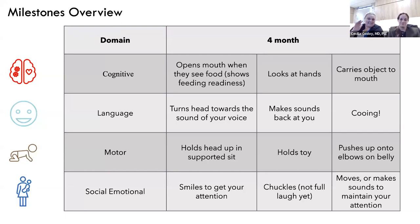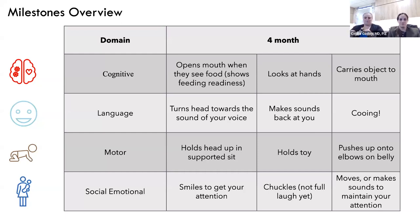Motor milestone at four months: holding the head up in a supported sit. This is why tummy time was so important — we're now putting food in front of your baby's face, and they need to protect their neck and airway so food goes to the stomach and not the lungs. We also look for holding toys, carrying objects to the mouth, and starting to push up onto elbows while on the belly — the earliest step toward crawling.